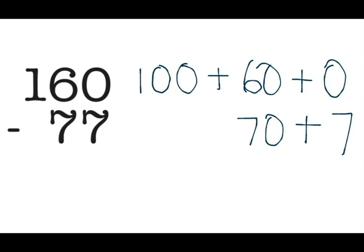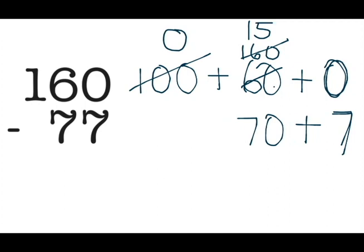I can't take 70 away from 60, so I'm going to come over to the hundreds place. I'm going to take that hundred and move it over and add it to 60. But I also have the problem that I can't take 7 away from 0, so I need to take a 10 from 160. I'll make it 150.